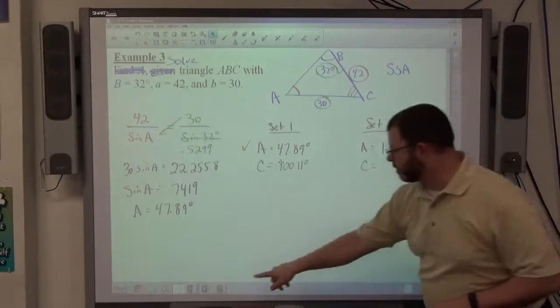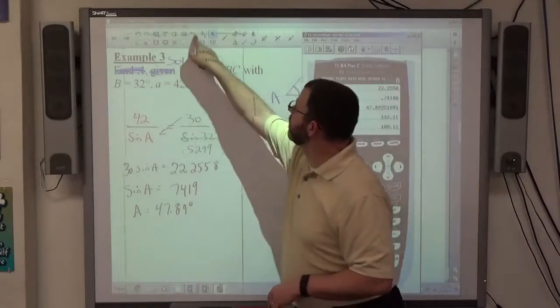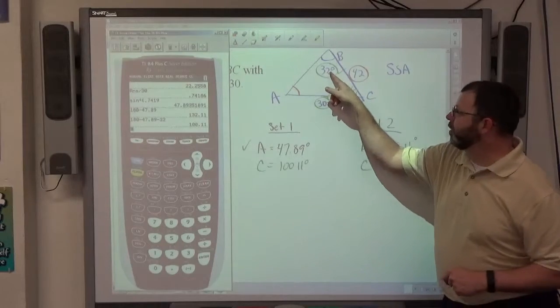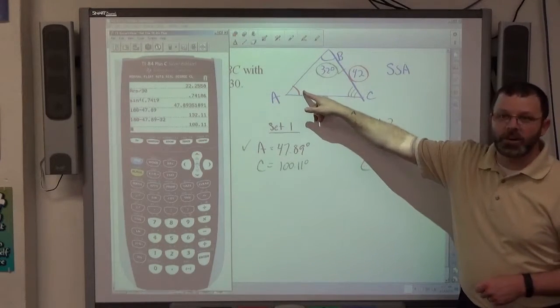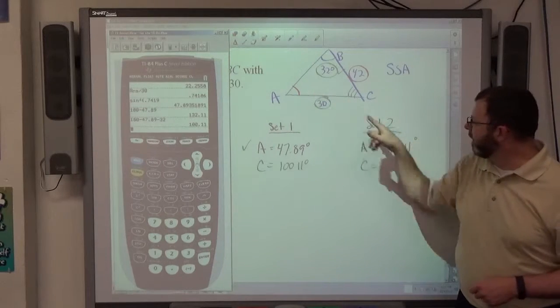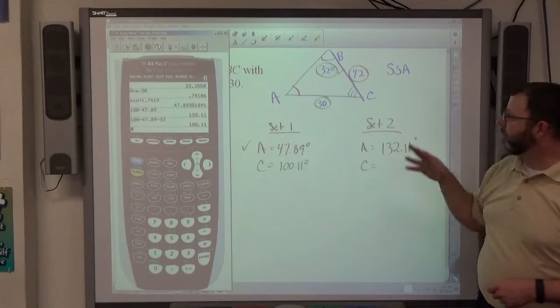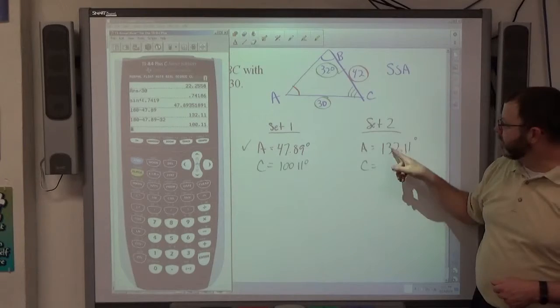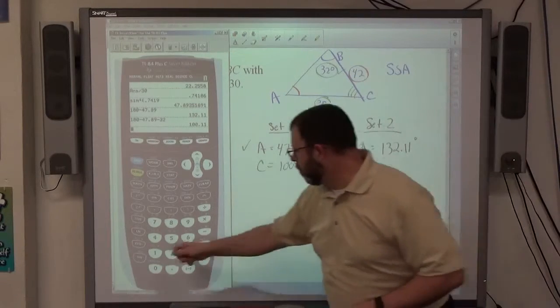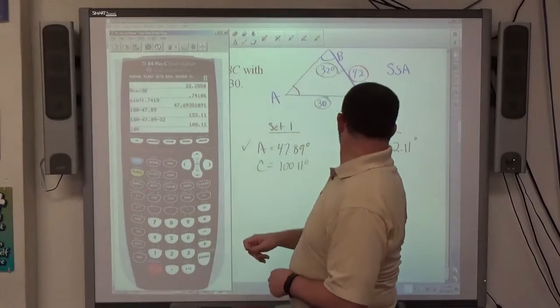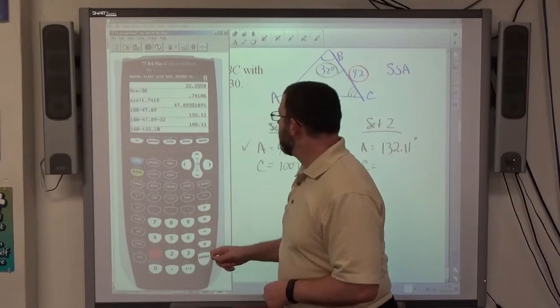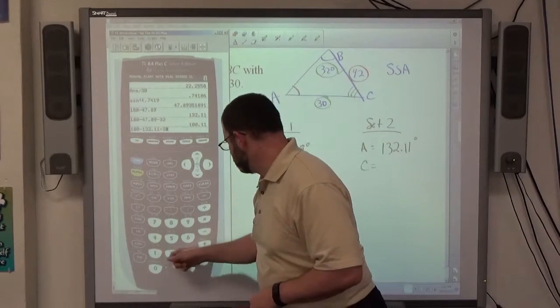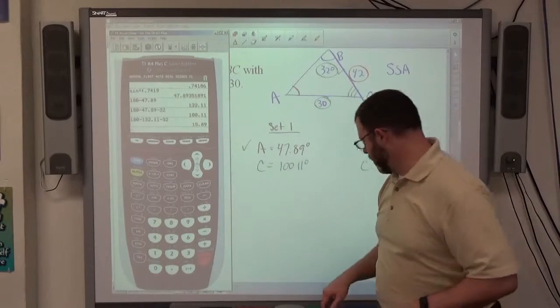If I do the same thing here, I know B is 32 degrees, and A could be 132.11 degrees, not drawn to scale, but if A is that and B is that, and I want to find out C, C would equal 180 minus this minus that. So 180 minus 132.11 minus 32, that comes out to 15.89 degrees.